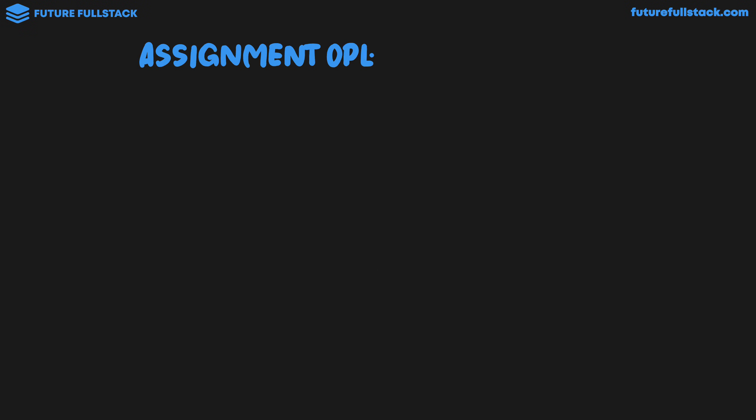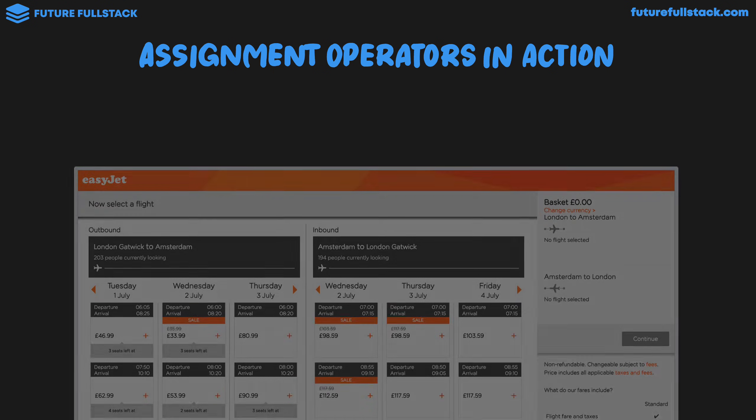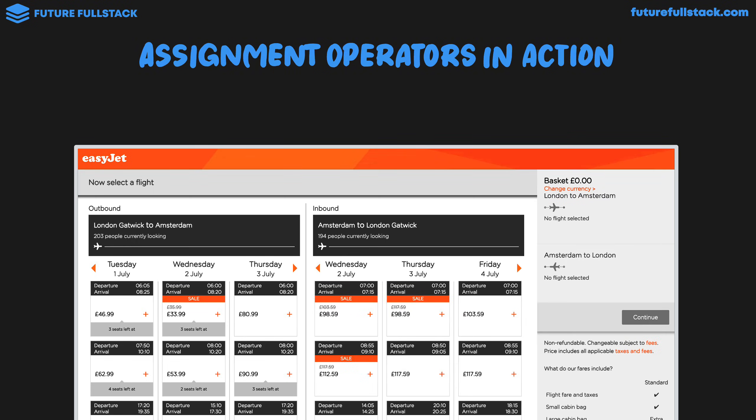So let's take a look at assignment operators in action. It's going to be similar to the example we just went through, but now looking at our EasyJet web application. Initially, the basket is zero pounds. So we would have a variable let totalPrice equals 0.